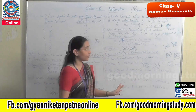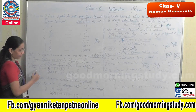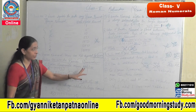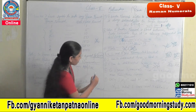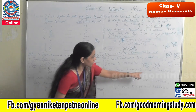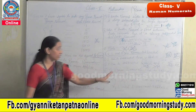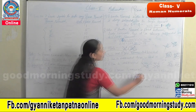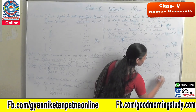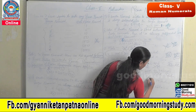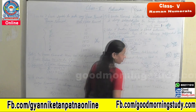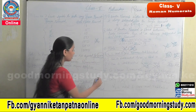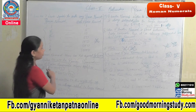Fourth caution: no Roman numeral can be repeated more than 3 times. This caution is related to the first rule about repetition. We can write III, XXX, and CCC, but we cannot write CCCC — that is wrong. We cannot repeat any Roman numeral more than 3 times.